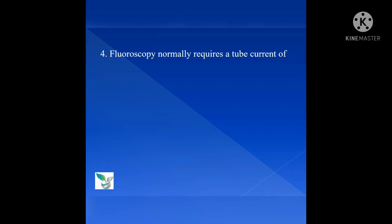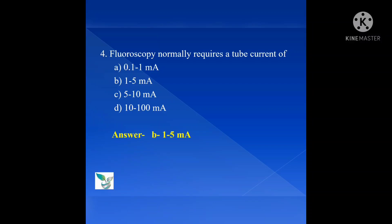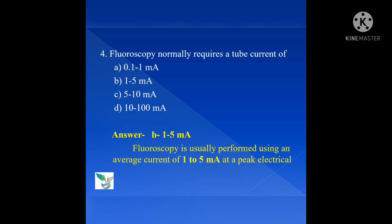Question number 4: Fluoroscopy normally requires a tube current of — Option A: 0.1 to 1 milliampere; Option B: 1 to 5 milliampere; Option C: 5 to 10 milliampere; Option D: 10 to 100 milliampere. The answer is Option B, 1 to 5 milliampere. Fluoroscopy is usually performed using an average current of 1 to 5 milliampere at a peak electrical potential of 75 to 125 kVp (kilovoltage peak).